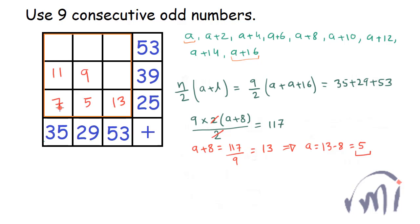Otherwise also here we have 7 plus 5, 12. 12 plus 13 will give you 25, and the next smallest sum is 53 plus 29, so this will be 15.